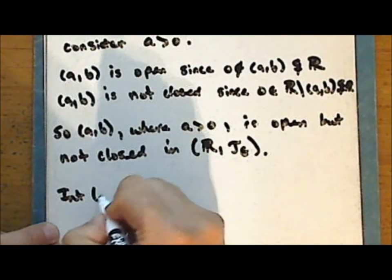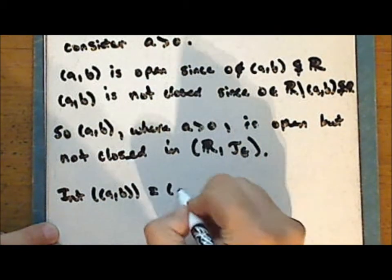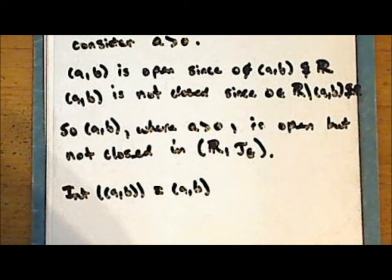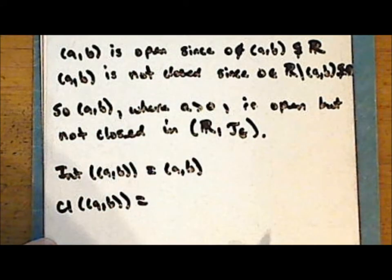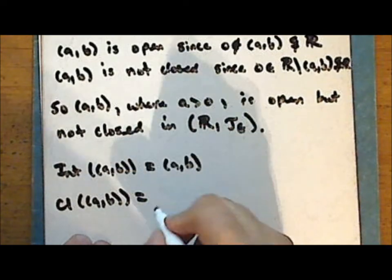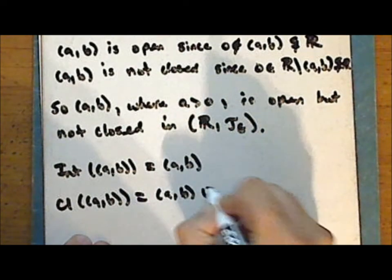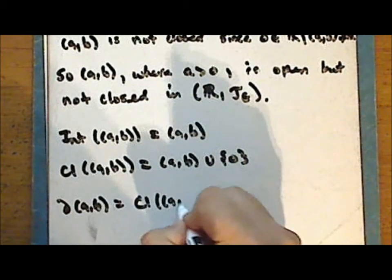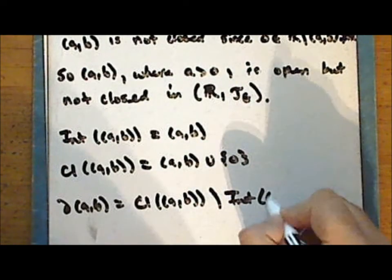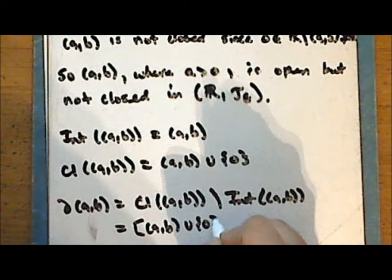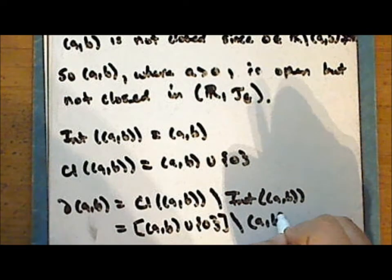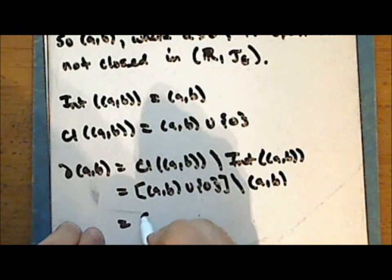The interior of the interval is the interval itself, as it is an open set — it is its own interior. The closure of the interval from a to b is the smallest superset that is closed, and so that is the union of this interval with the singleton set containing zero. The boundary of the interval from a to b is the closure set minus the interior, which is the union of the interval from a to b with the singleton containing zero, set minus the interval itself. And so the boundary is once again the singleton set containing zero.